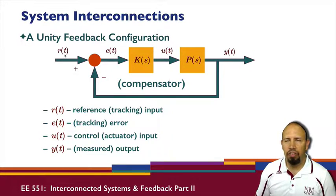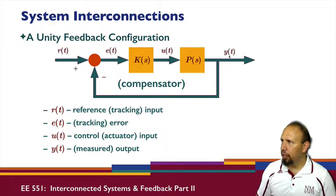We have various signals that are of importance: our reference or tracking input - this is the signal we want our output to follow. The error signal is the difference between the reference and the output. Here's our control signal, our actuator input, and then our measured output. These are the things we're able to measure.